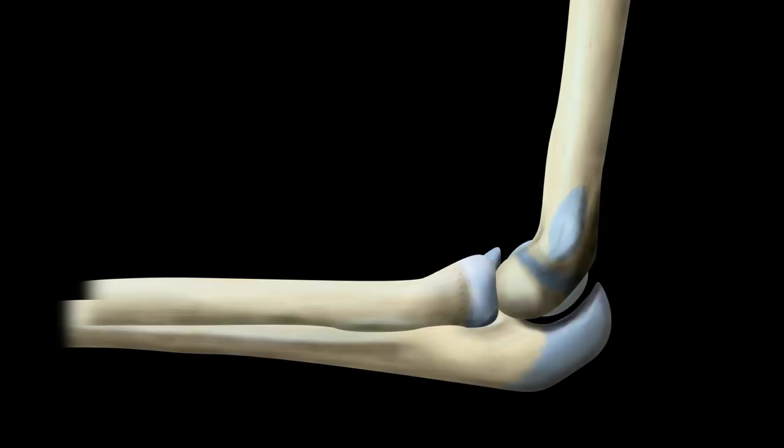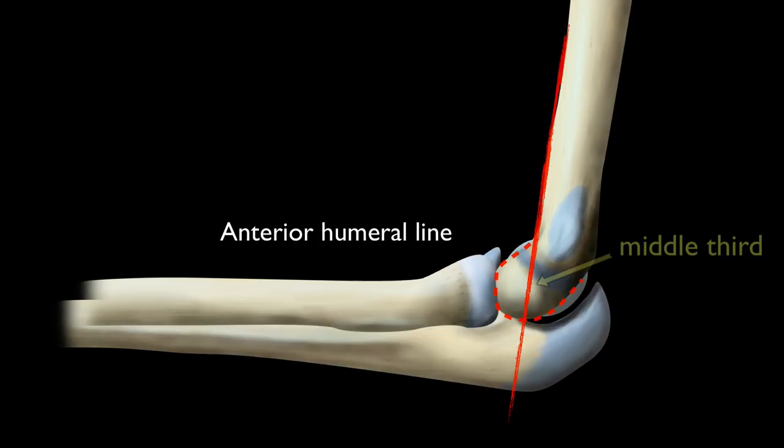A line drawn down the anterior surface of the humerus should intersect the middle third of the capitellum. Since the capitellum is displaced posteriorly in the vast majority of supracondylar fractures, this is an extremely helpful tool for demonstrating correct alignment at the elbow joint.